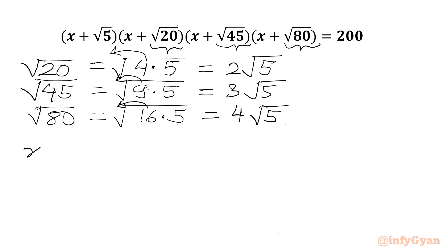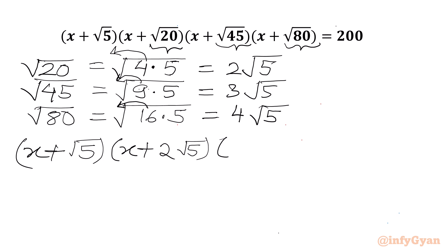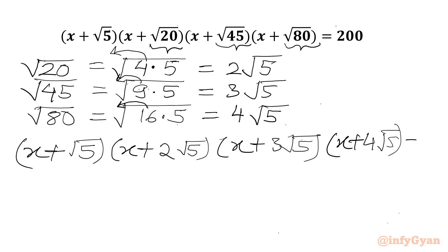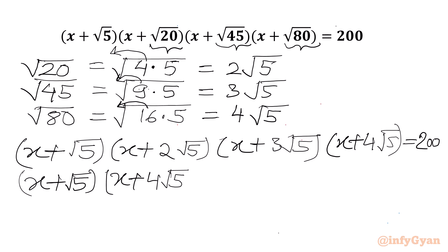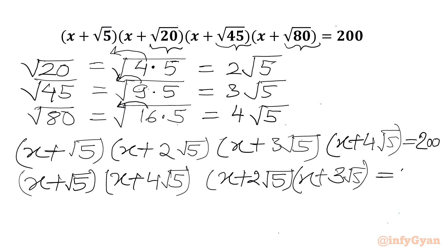So I will write our equation: (x + √5)(x + 2√5)(x + 3√5)(x + 4√5) = 200. Now I will multiply the first and last bracket, and the second and second-last bracket together, equal to 200.